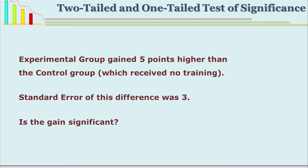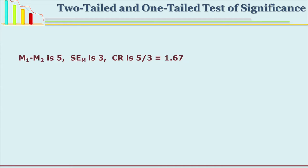There is a gain of 5 points. Is this gain significant? That is the question. What is given: M1 minus M2 is 5, SE of difference is 3. We have to calculate the critical ratio, that is D divided by SE of D — the difference between two means divided by the SE of difference. So we have 5 divided by 3, which gives us 1.67.